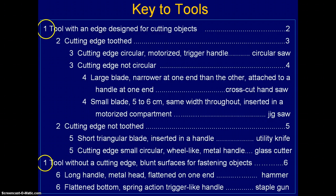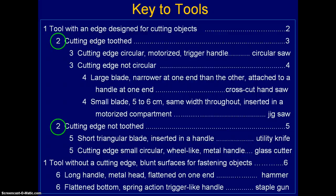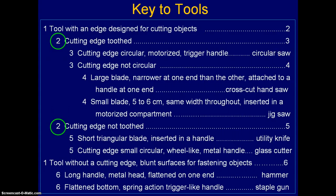If the first choice applies — that the tool was designed for cutting objects — then you go to number two. When you're designing a key, it's always nice to have the first choice be the one where you've actually identified it, and then the choice where you're going to continue below it, so that it flows logically rather than being interrupted. That's a kind of organization we'll look at more when we talk about making a key.